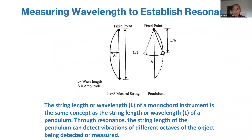Resonance is used in the concept of measuring the octaves, and it's used in terms of measuring subtle energies with pendulums. A pendulum is no different than a monochord instrument, in the sense that the monochord is based upon the string length which gives the note you create. With a pendulum it's the same concept — it's the string length between the fingers and the weight of the pendulum that gives you the wavelength with which you can go into resonance and therefore detect the vibrations of an energy.